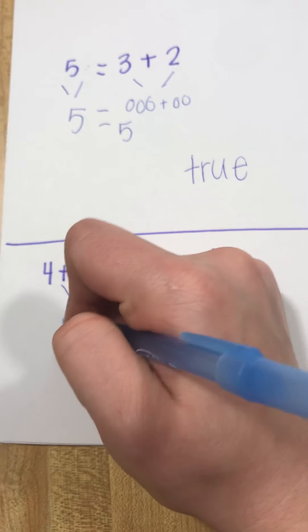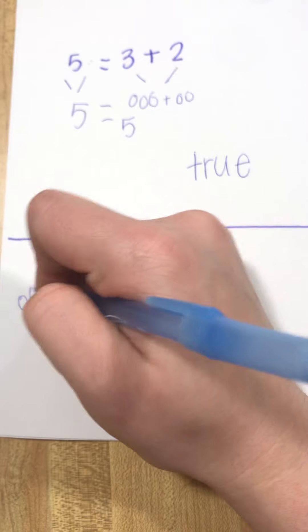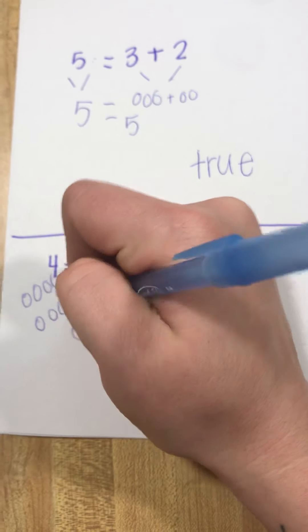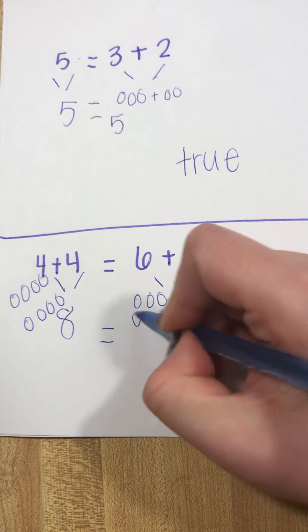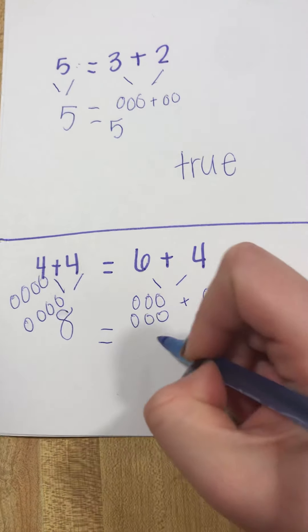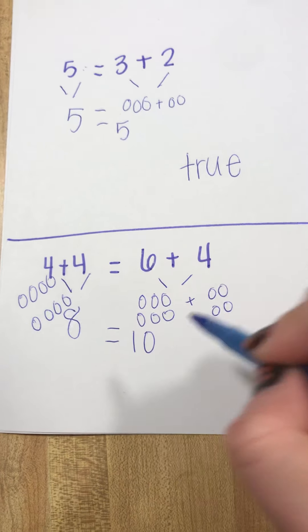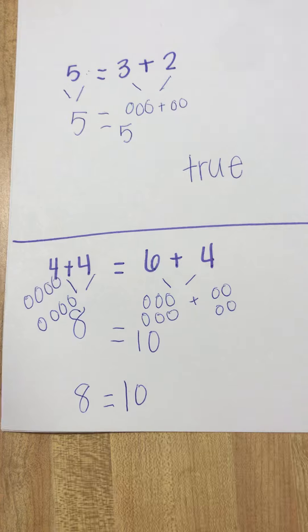So four plus four, if I know my doubles facts is eight. If I don't, I can draw a picture. And then over here I might draw a picture again. That is a make ten fact. So I'm going to move this down here so it's a little bit neater and you can see it. Eight equals ten.